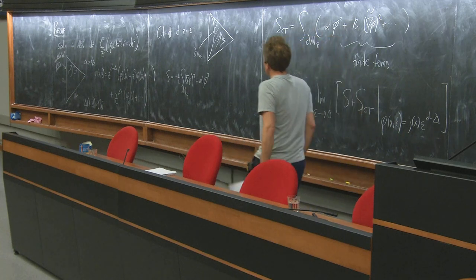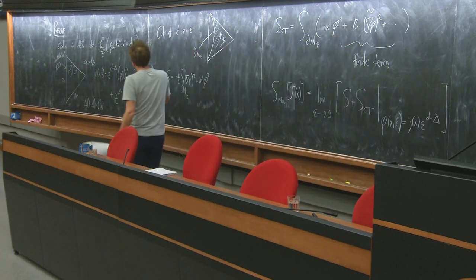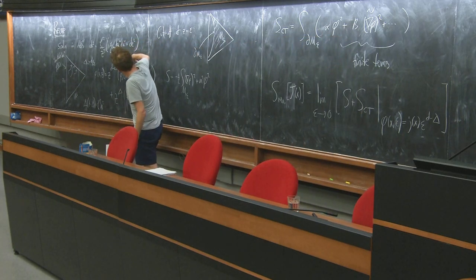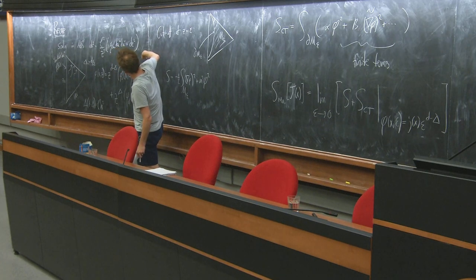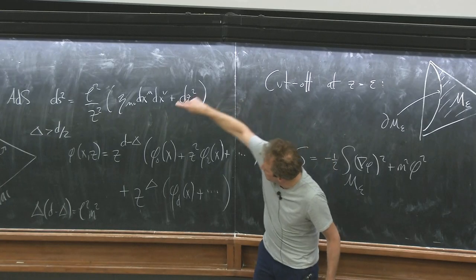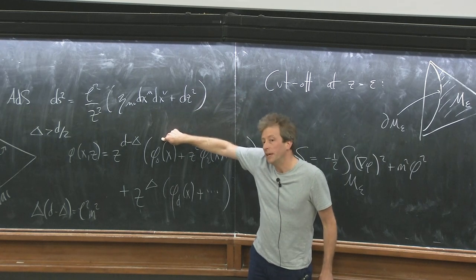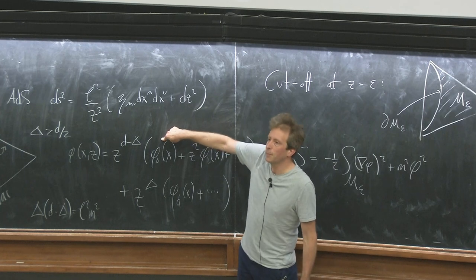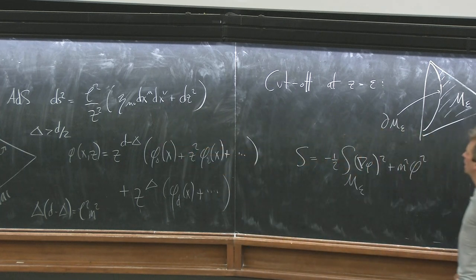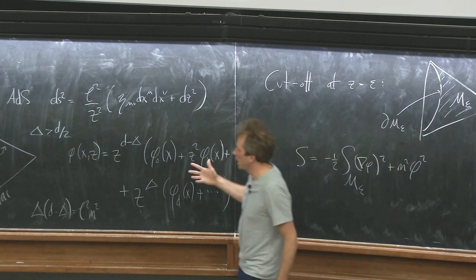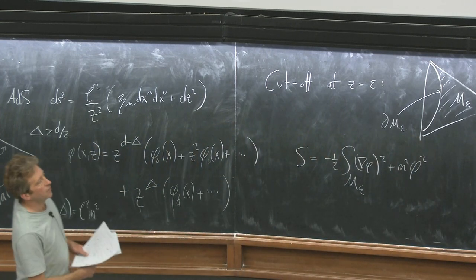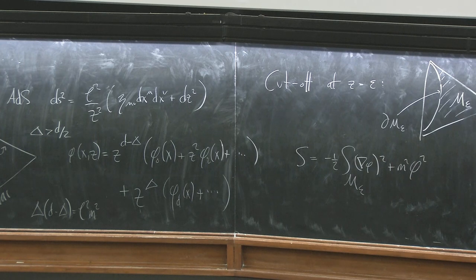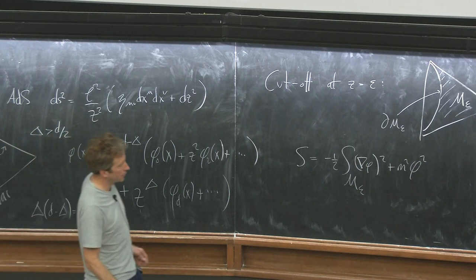The key observation is that this divergence is rather trivial: all of the nasty finite set of terms causing divergences are determined by phi_0, which is your data anyway — you know it, there's nothing interesting or dynamical about it, you just fix it at the start. So there is a procedure to remove these divergences from the action to get what we call the renormalized on-shell action — on-shell meaning evaluated on a solution.